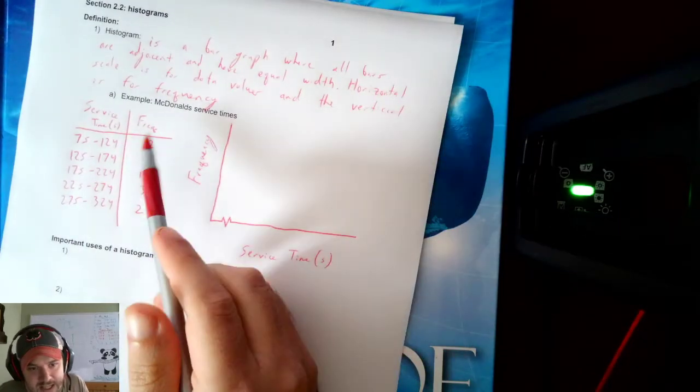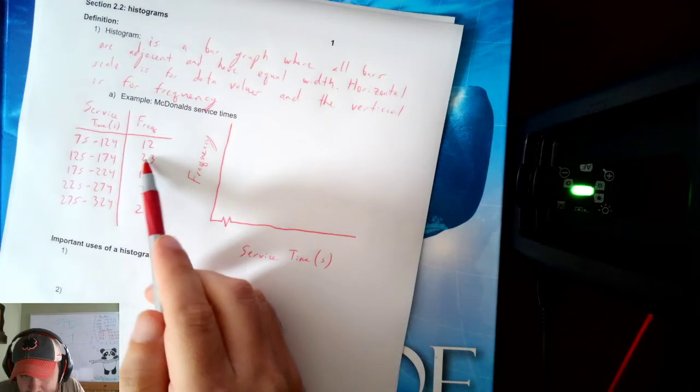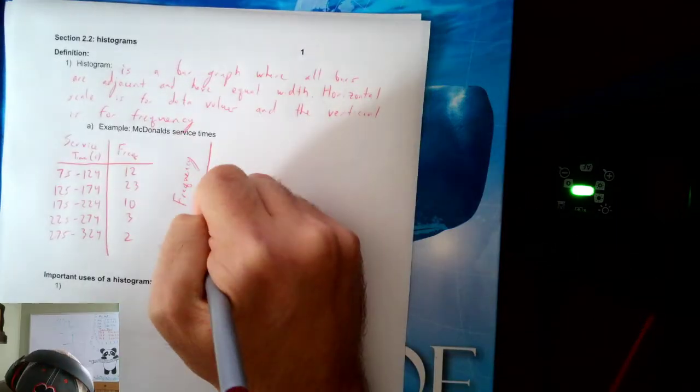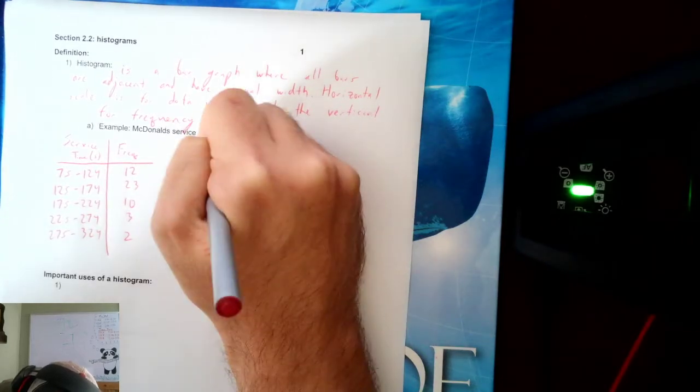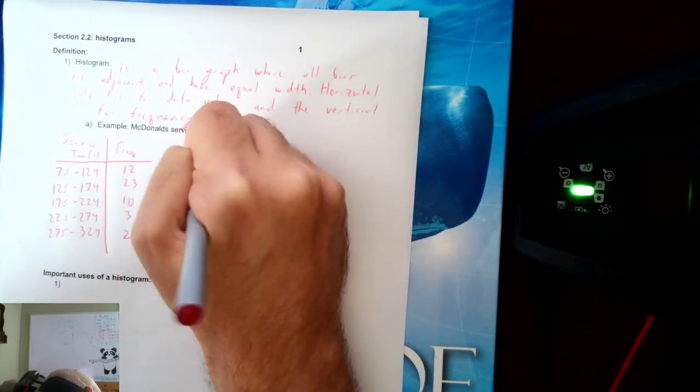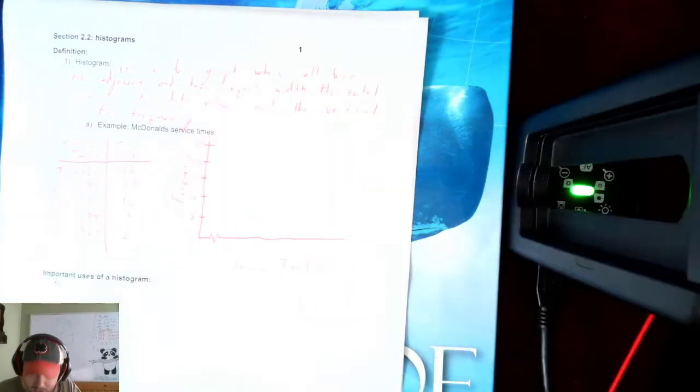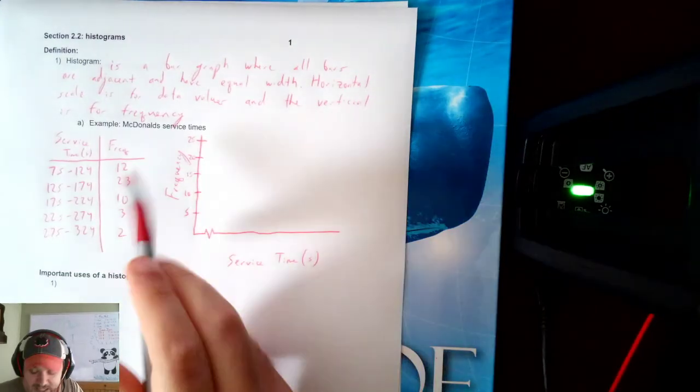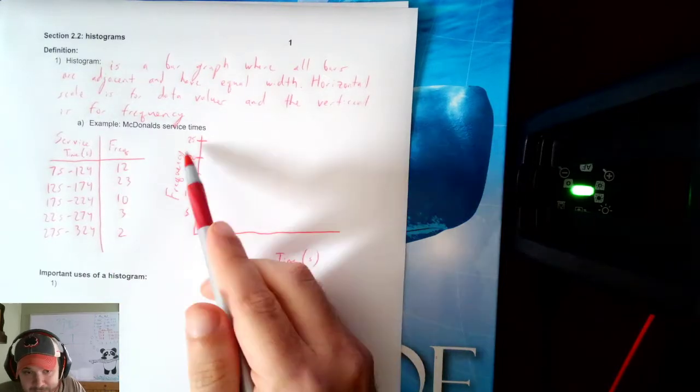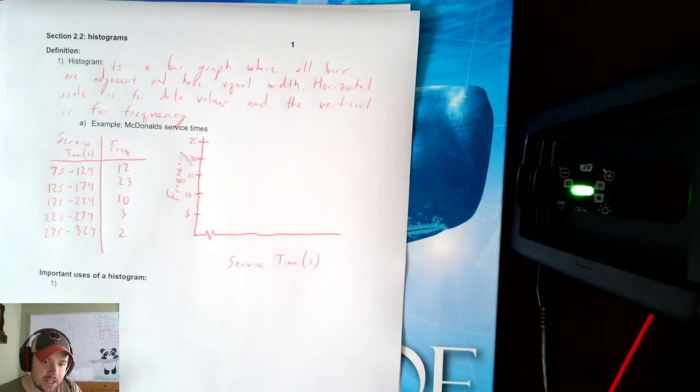The vertical is always frequency. And for the vertical scale, I need to get up to the number 23. I'm going to count by fives: 5, 10, 15, 20, 25. Feel free to scale as you need. We need to get up to 23, so I counted by fives to get to 25.